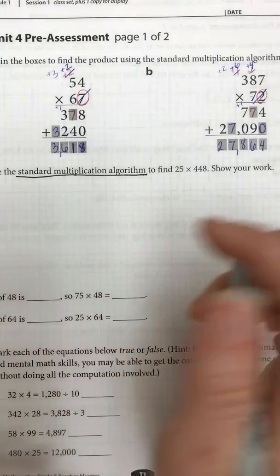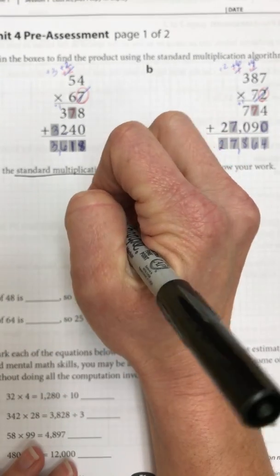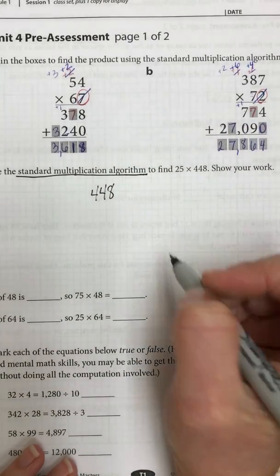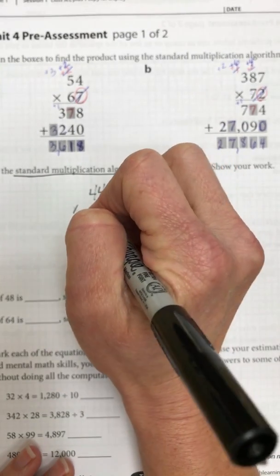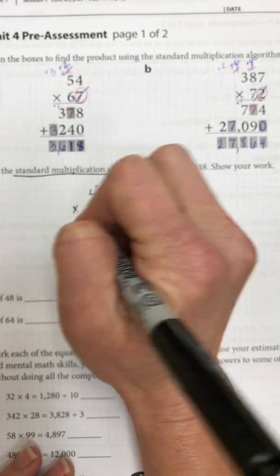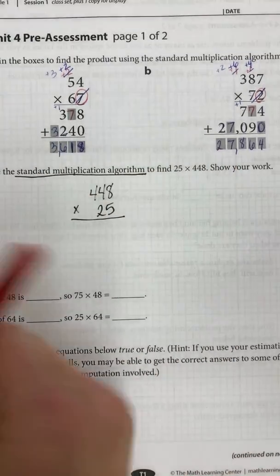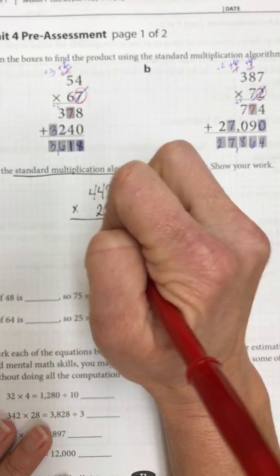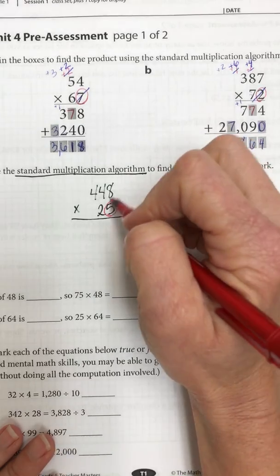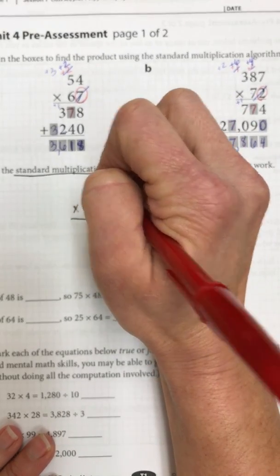Okay, so my problem is 448, I always like to put the biggest number on top, times 25. Okay, and I'm going to start with the red first, multiplying my 5 out. So 5 times 8 is 40, 0, carry my 4.